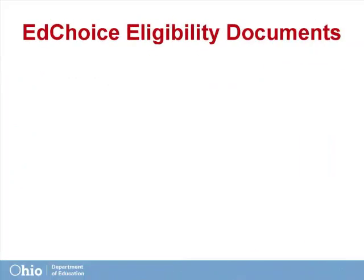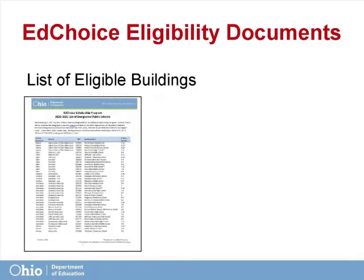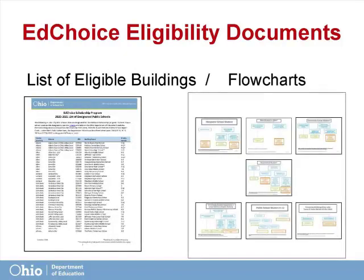Note, there are specific documents found on the EdChoice website that you will need to reference for each potentially eligible student. The first is the current list of EdChoice designated eligible schools. Other needed documents include the EdChoice eligibility flowcharts, also found on the EdChoice website. We will be referencing both when student examples are introduced and eligibility is explored.